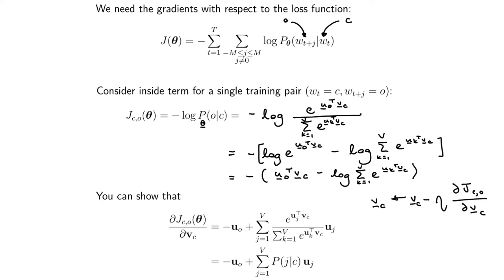We also need the partial derivatives for the U vectors, since we want to move the context vectors as well in order to minimize our loss function. You can go through very similar steps and derive an expression for the partial derivatives of the context word vectors — similar steps, similar equations. If you have these expressions, you can actually train your SkipGram Word2Vec model without relying on a neural network package, because you can just calculate these derivatives by hand.